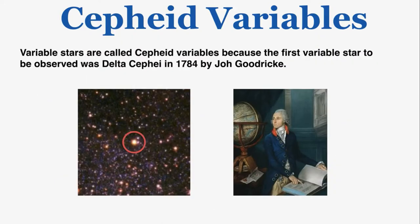Variable stars are called Cepheid variables because the first variable star to be observed was Delta Cephei in 1784 by John Goodrich.